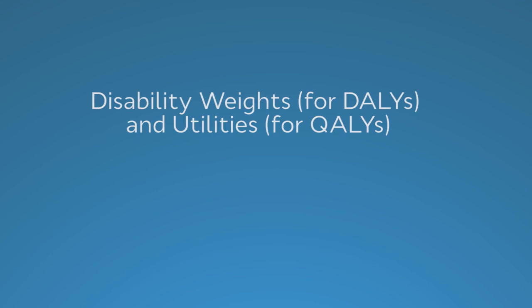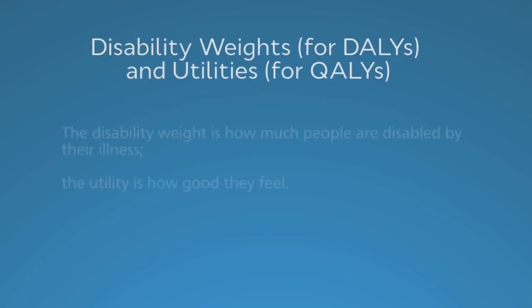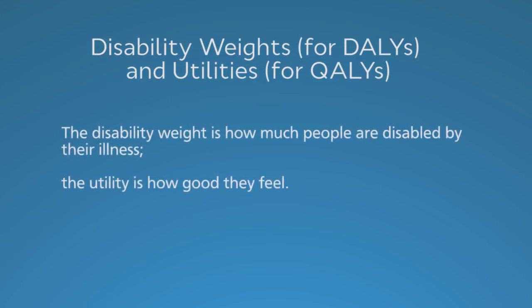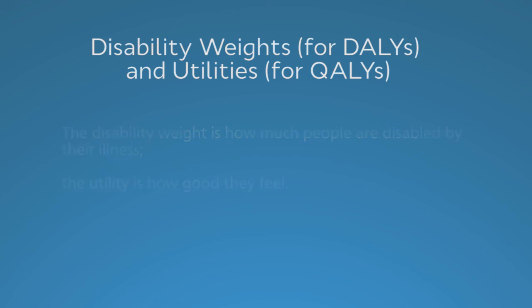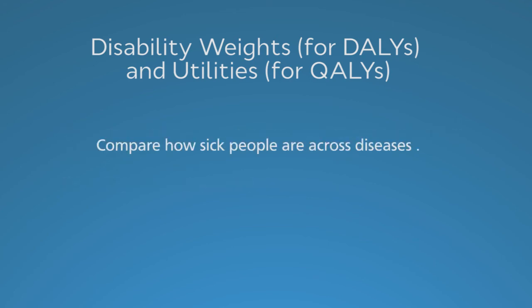Now I'm going to say more about an issue only briefly mentioned in the video: how we quantify morbidity — the disability weights used in DALYs and the utilities used in QALYs. The disability weight is how much people are disabled by their illness. The utility is how good they feel. Both are on a scale of zero to one. A disability weight of zero means no disability or fully healthy; conversely, a utility of one means healthy. So both present the relative severity of different diseases, disease stages, and disease events. You can compare how sick people are across diseases, whether you are using disability weights or utilities.